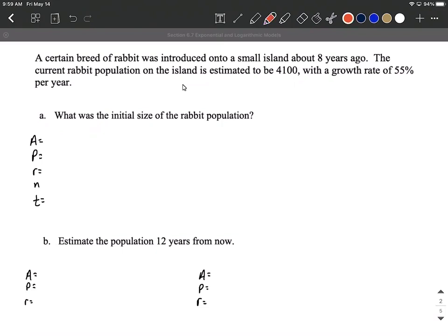So as we go through this, let's try to identify those key numbers. Eight years ago the rabbits were dropped off. The current population is 4100 and it's a growth rate of 55 percent per year.